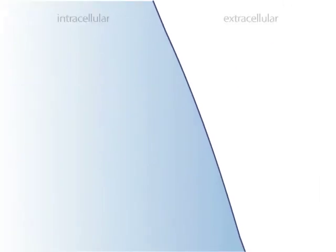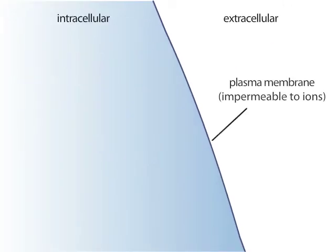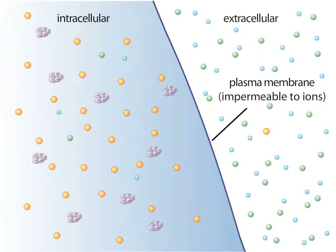Neurons, like all living cells, are surrounded by a plasma membrane that is impermeable to ions. This property allows a neuron to maintain different concentrations of ions between the inside and outside of the cell.